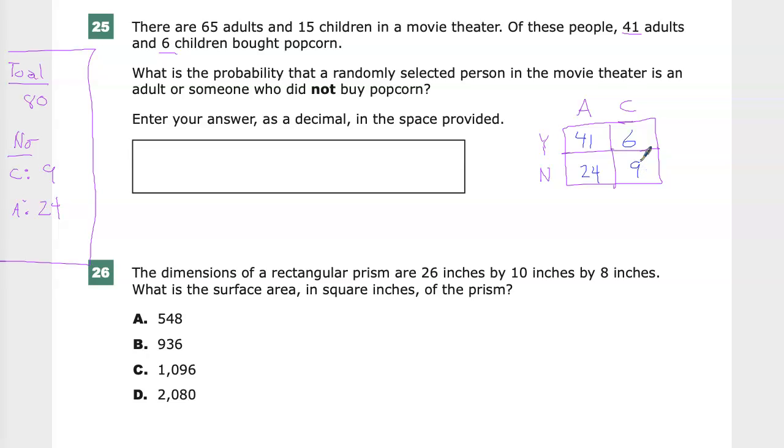They want to know what the probability is that a randomly selected person in the movie theater is an adult or someone who did not buy popcorn. So what I'm looking at is two bands of information. The first is people who are adults. So these two things matter to me.